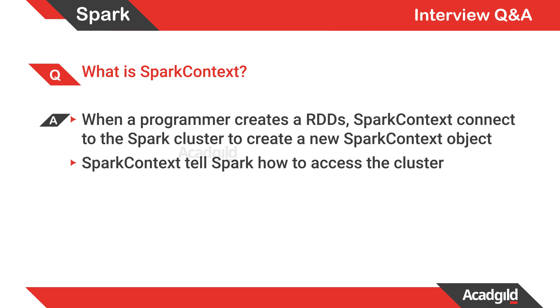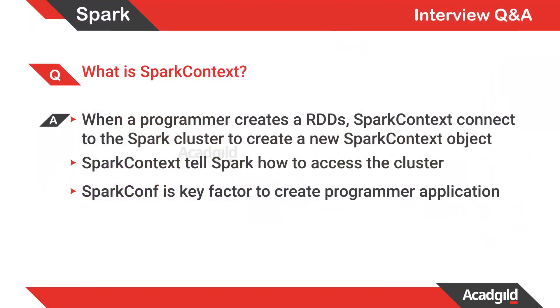Spark Context is an entity which tells Spark how to access a cluster. As we saw in the previous section, Spark Context communicates with the cluster manager — which could be YARN, Mesos, or standalone. It tries to get resources, submits your job, and then executes the job inside an executor using the resources obtained from the cluster manager.